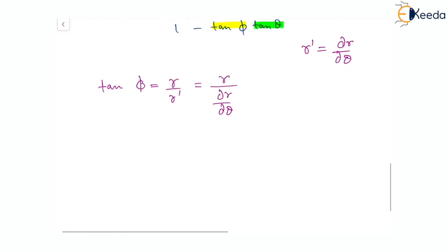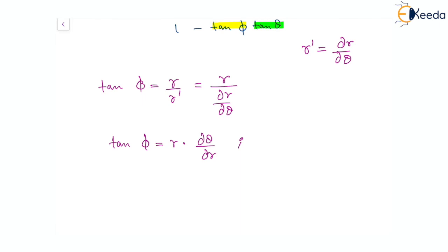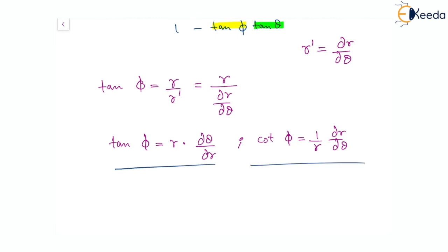We can also write the reciprocal form: cot(φ) equals (1/R)(dR/dθ). These are the expressions for the angle φ between the radius vector and the tangent to a polar curve. This concludes the topic of angle between radius vector and tangent. I hope you understood — thank you.